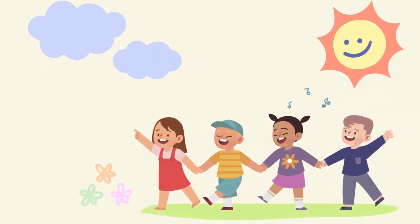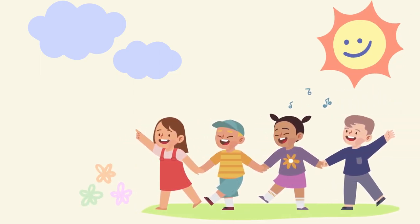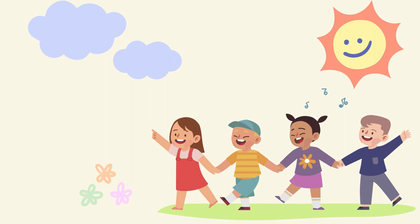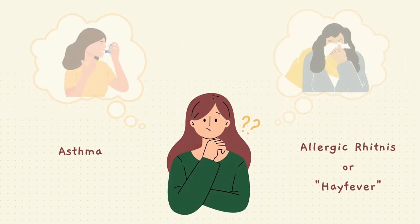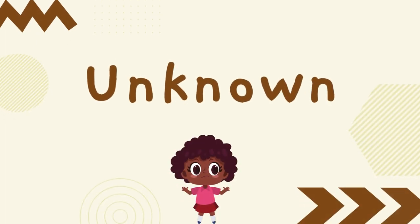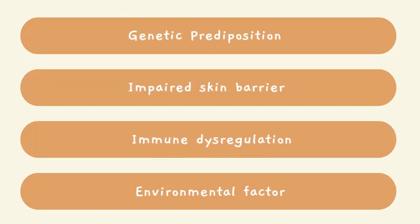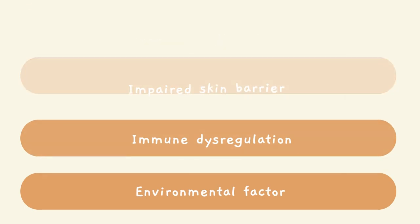Atopic dermatitis, also known as eczema, usually appears early in life and is often associated with other allergic diseases such as asthma and allergic rhinitis, or in other words, hay fever. The cause of atopic dermatitis is not completely understood yet, as it is a complex multifactorial disorder likely arising from many different factors, which could include genetic predispositions, impaired skin barrier, immune dysregulation, and environmental factors.